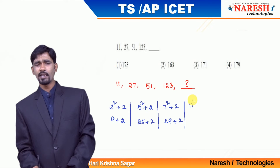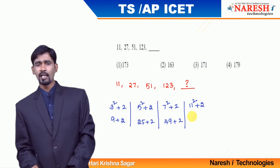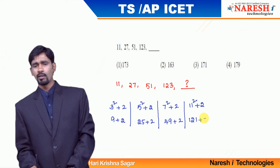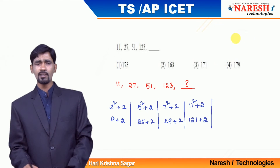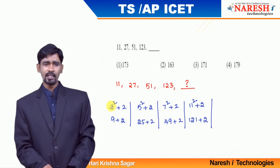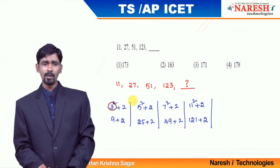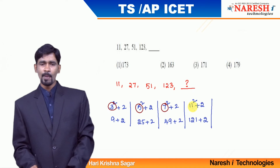What is 123? 123 is 11 squared plus 2 — that is 121 plus 2, which is 123. So by observing this pattern, the squares being used are of prime numbers: 3, 5, 7, and 11.